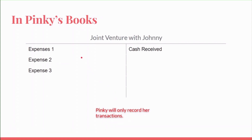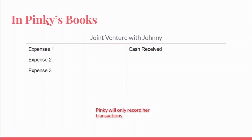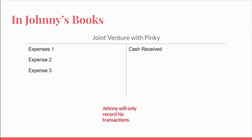Similarly, in Pinky's books, she will open an account 'Joint Venture with Johnny' and put any cash received by her on the credit side and her expenses on the debit side. She will only record her own transactions. Pinky has no clue about what transactions Johnny is doing, and Johnny doesn't know anything about Pinky.